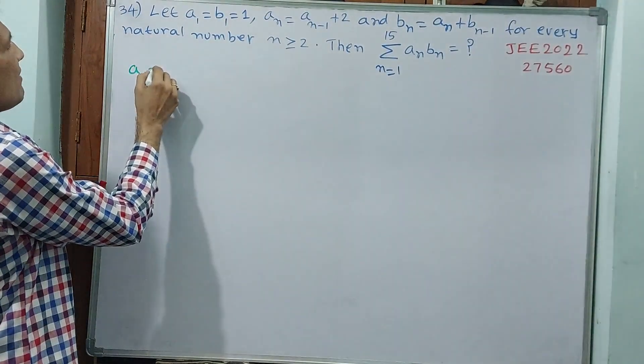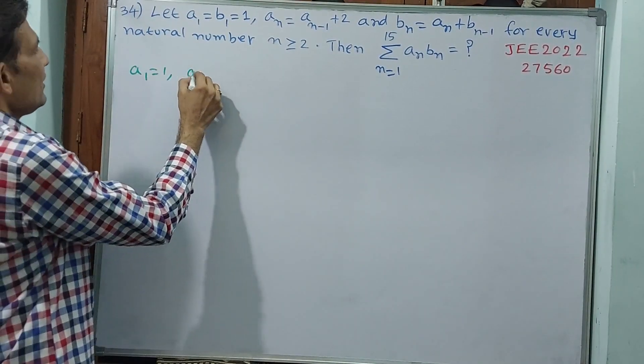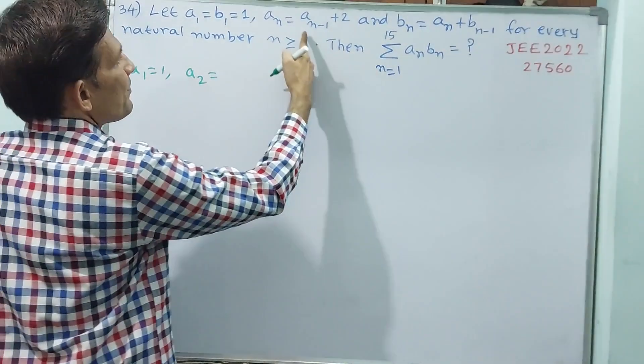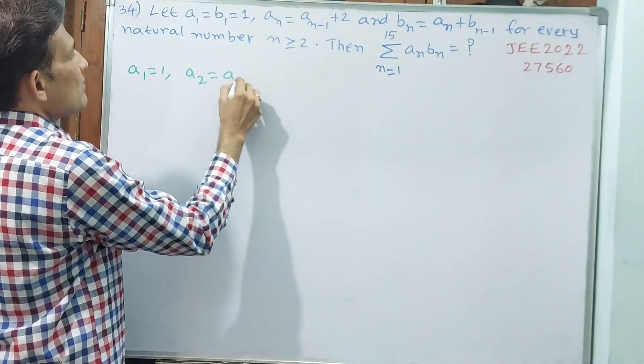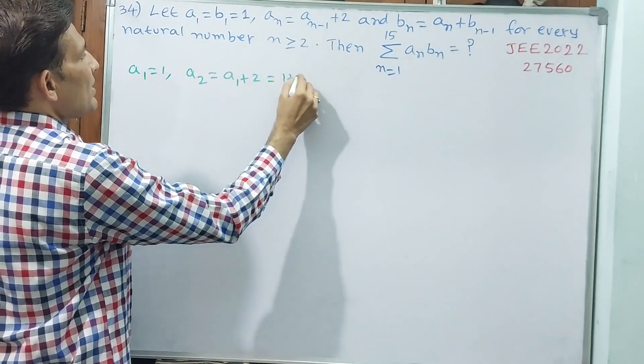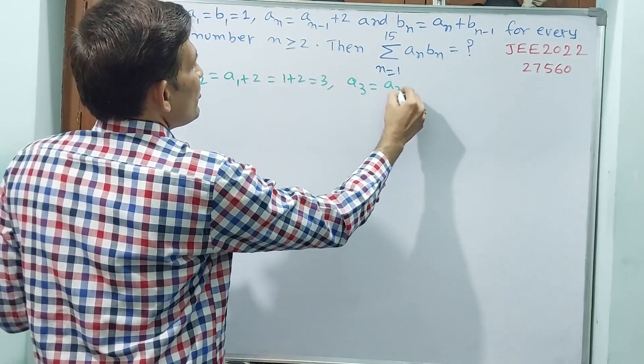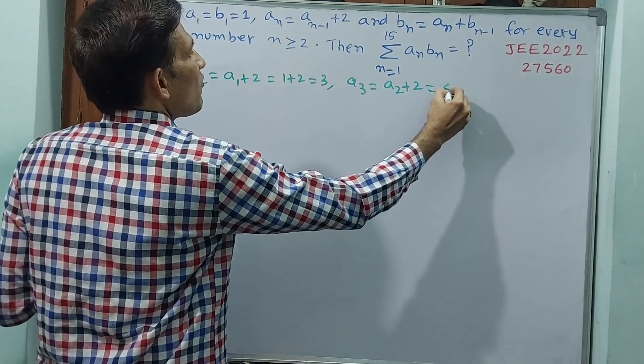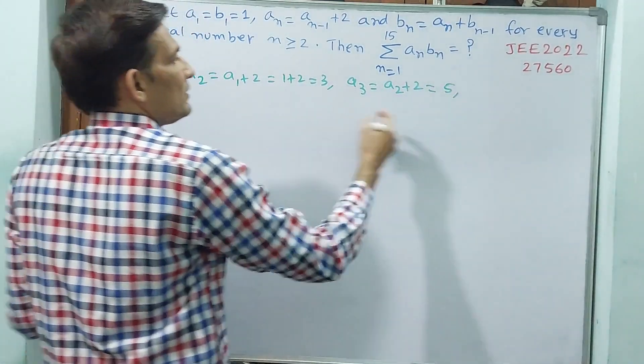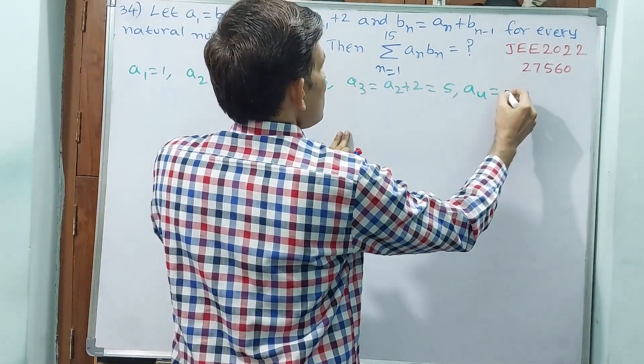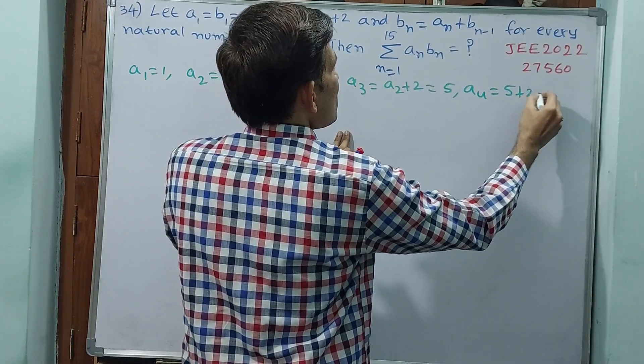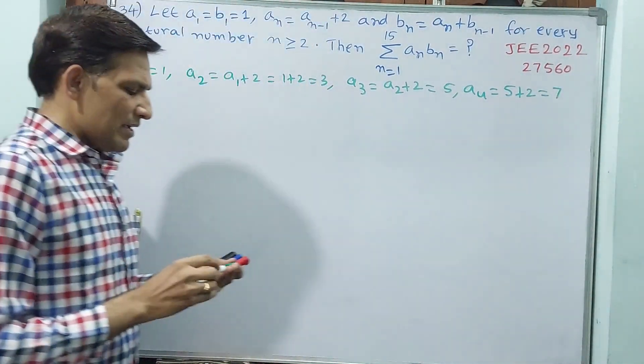See, a1 is equal to 1. Then a2 is equal to a1 plus 2, that is equal to 1 plus 2, that is equal to 3. a3 is equal to a2 plus 2, that is equal to 5, 3 plus 2. a4 is equal to 5 plus 2, that is equal to 7.